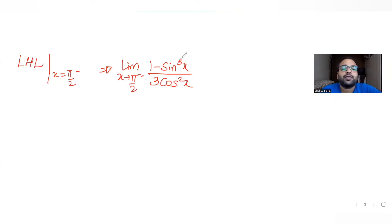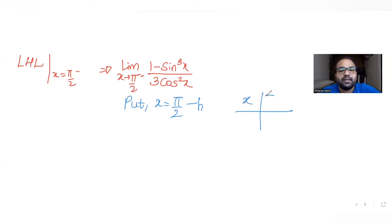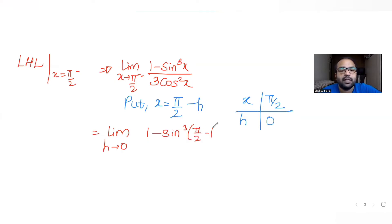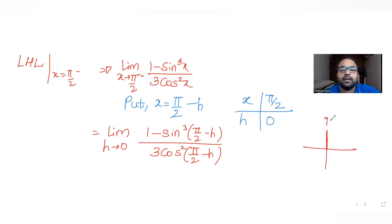Since x is less than π/2, we substitute x = π/2 - h. When x = π/2, h = 0, so the limit becomes: limit as h → 0 of (1 - sin³(90° - h)) / (3cos²(90° - h)). Now sin(90° - θ) = cosθ and cos(90° - θ) = sinθ, and in the first quadrant all trig ratios are positive.